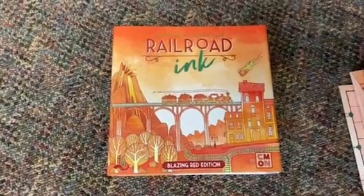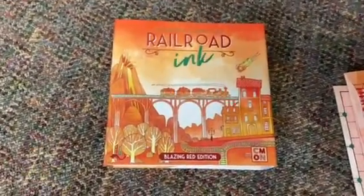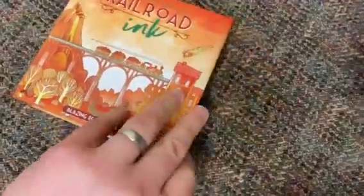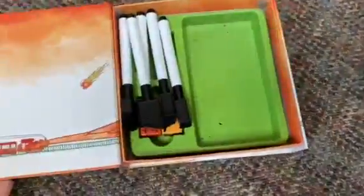Today we're going to be talking about Railroad Inc. This is the Blazing Red Edition and we'll scan around here and see what we got. This is a really cool box, by the way, that comes in because it has that magnetic cover to it. So it kind of clips on and then it clips back off.